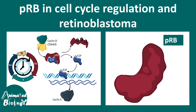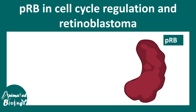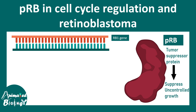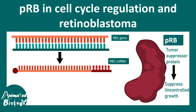In this video we'll be talking about PRB and its role in cell cycle regulation in the context of retinoblastoma. PRB is a protein which is tumor suppressor in nature, meaning it suppresses uncontrolled growth or cancer formation. It is encoded by the RB1 gene, whose mRNA is eventually translated into the PRB protein.